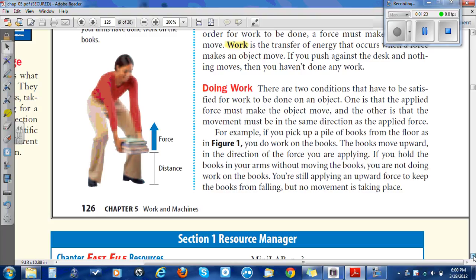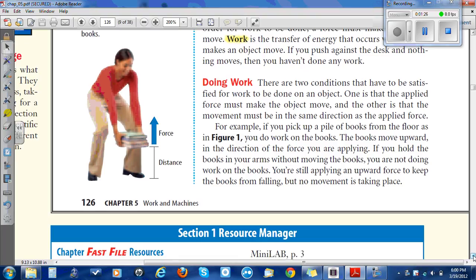Doing work. There are two conditions that have to be satisfied for work to be done on an object. One is that the applied force must make the object move. And the other is that the movement must be in the same direction as the applied force. For example, if you pick up a pile of books from the floor, as in figure one, you do work on the books. The books move upward in the direction of the force you are applying. If you hold the books in your arms without moving the books, you are not doing work on the books. You're still applying an upward force to keep the books from falling, but no movement is taking place.